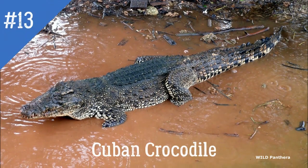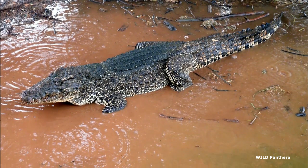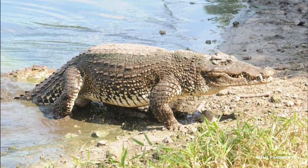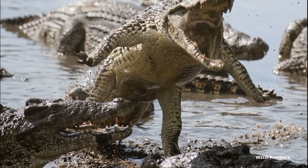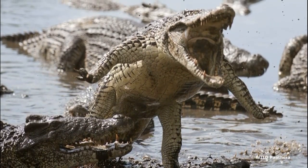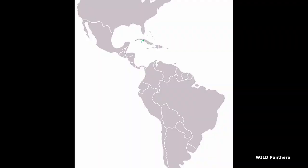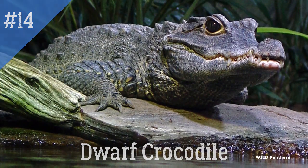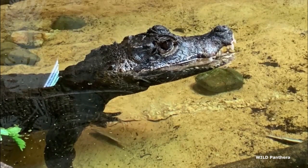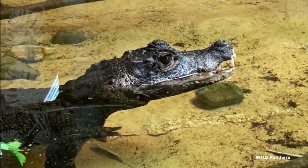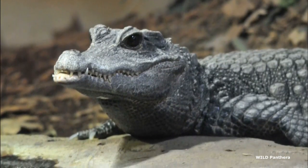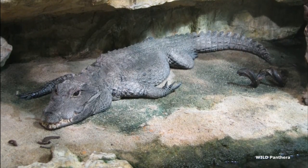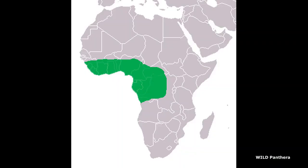12. Cuban Crocodile — Crocodylus rhombifer is a small but extremely aggressive species of crocodile that prefers freshwater swamps. It is a relatively terrestrial species with agile locomotion on land and sometimes displays terrestrial hunting. This species is found only in the Zapata Swamp and the Isle of Youth in Cuba. 13. Dwarf Crocodile — Osteolaemus tetraspis is the smallest of all living crocodiles and belongs to its own monotypic genus. New studies indicate there might be two or even three distinct species. It is a heavily armored species with uniform black coloration in adults, living in tropical forests of western Africa.